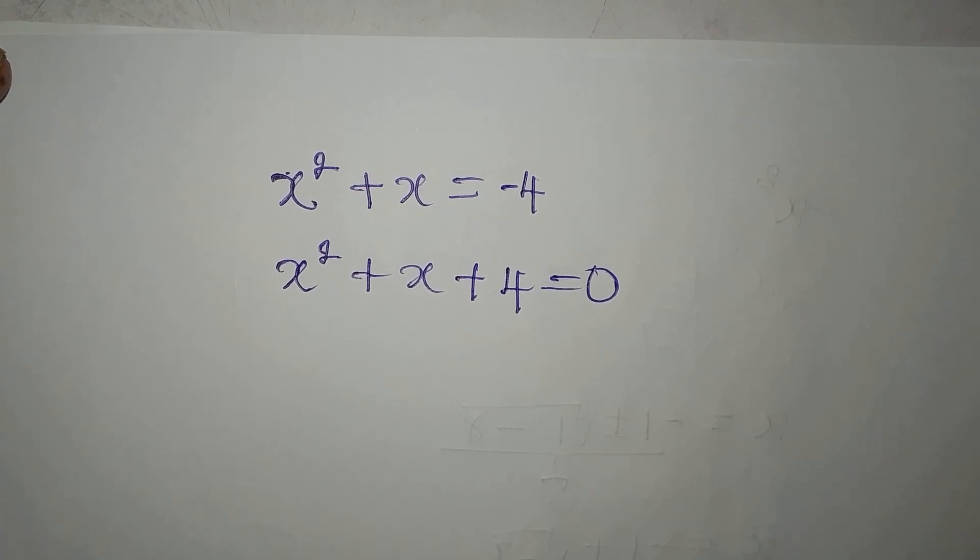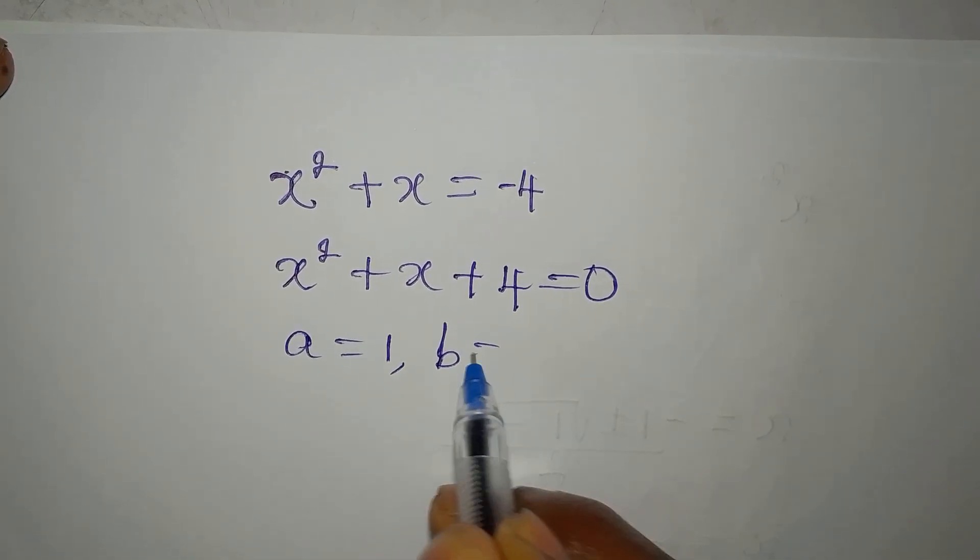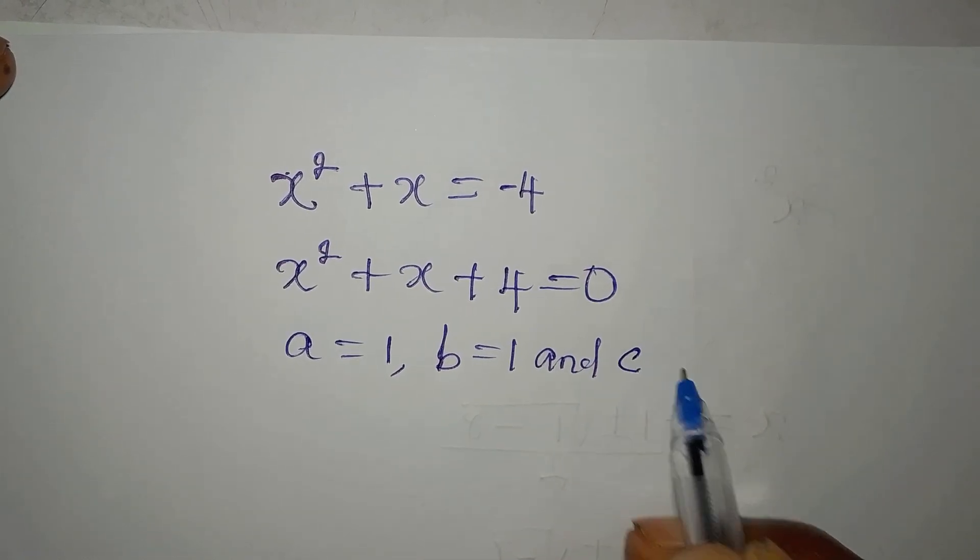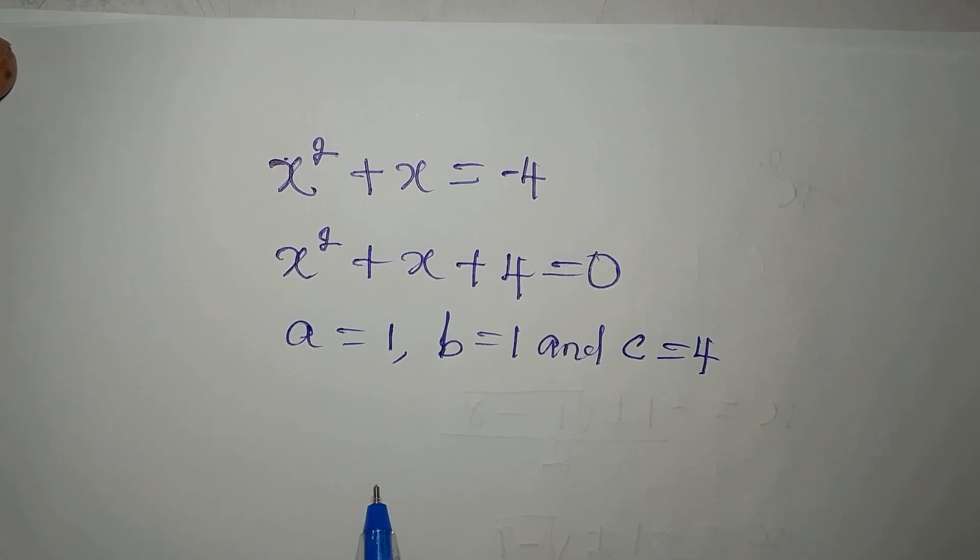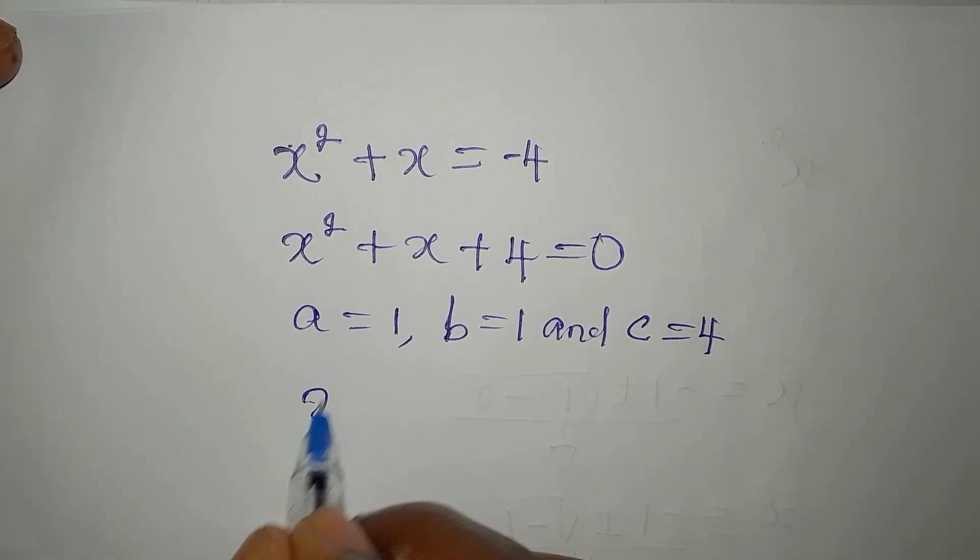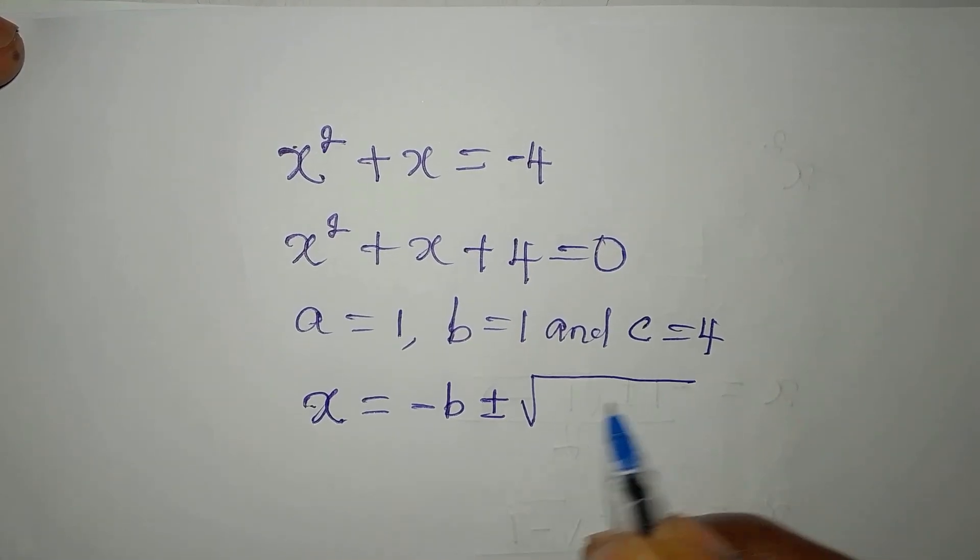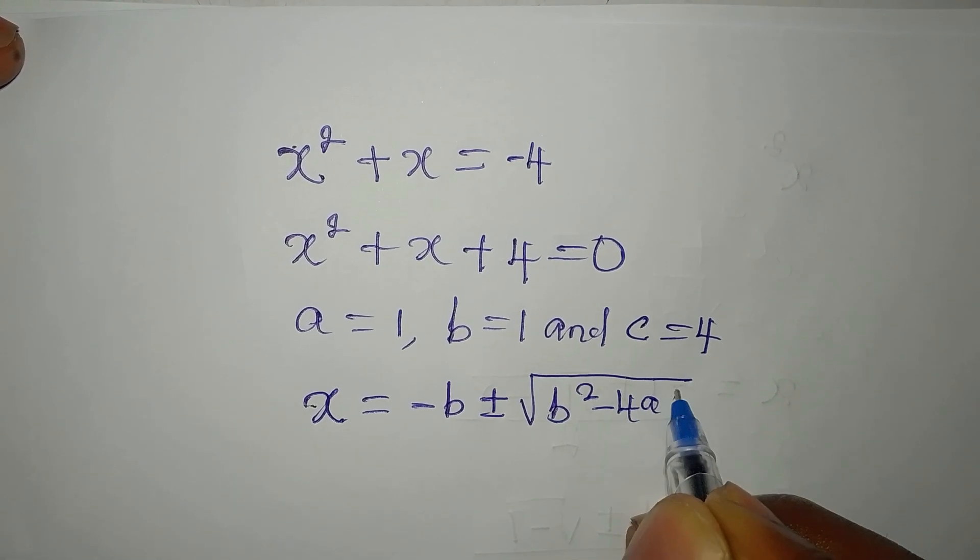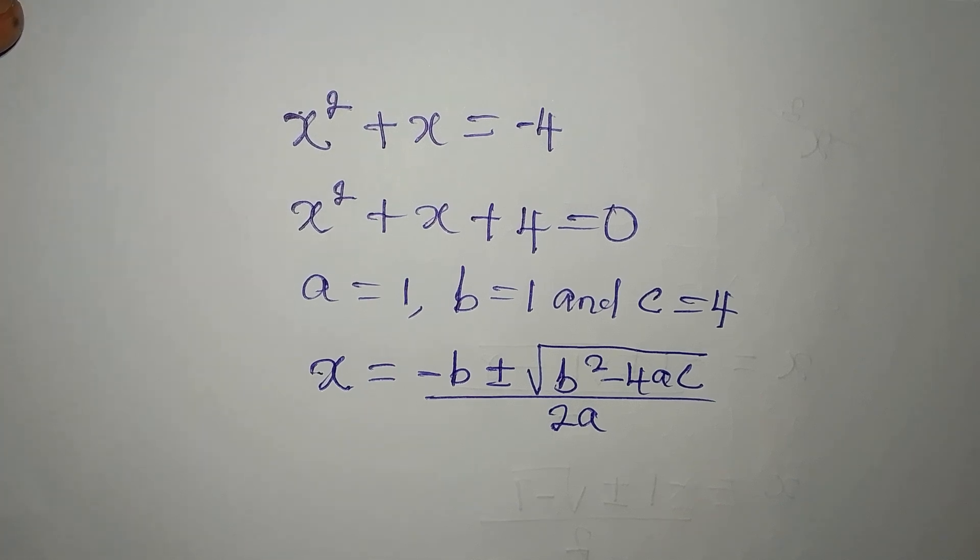What again can I do? We are going to use the formula again. A is still 1. B is still 1. And our c, this time around, is 4. Before, the c was negative 4. What is the formula? Can you recall the formula? If you cannot, the formula is x equals minus b plus or minus the square root of b squared minus 4ac, then you divide by 2 times a. Quadratic general formula, or the general formula for quadratic equation.